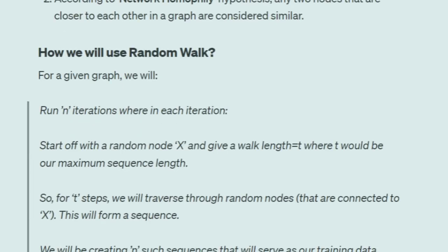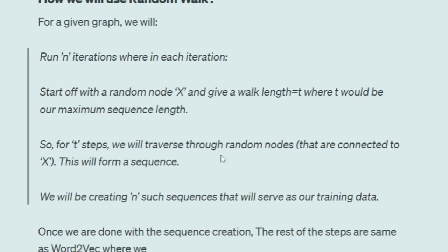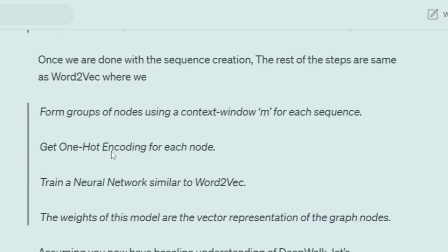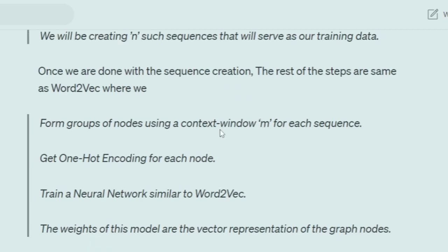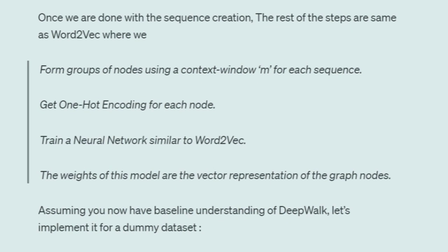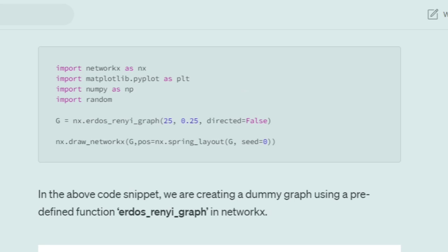To generate sequences using random walk, we select a number N as the total number of samples, start from a random node X in the graph, and consider a walk length T — for example, 10. For T steps, we traverse through random connected nodes, forming a sequence. We repeat this for N iterations to get N samples. We then apply a context window M, generate one-hot encoding for each node, and train a neural network similar to Word2Vec, whose weights become the vector representation.